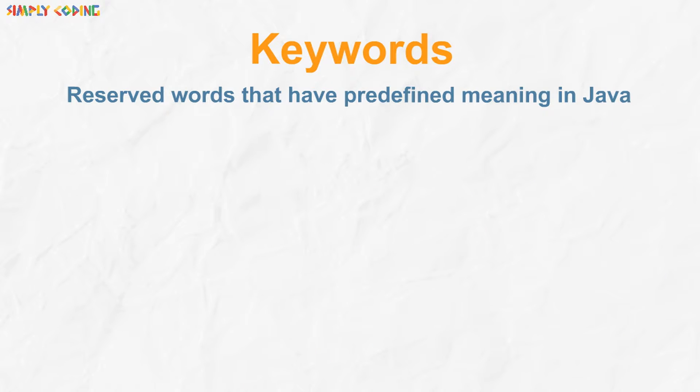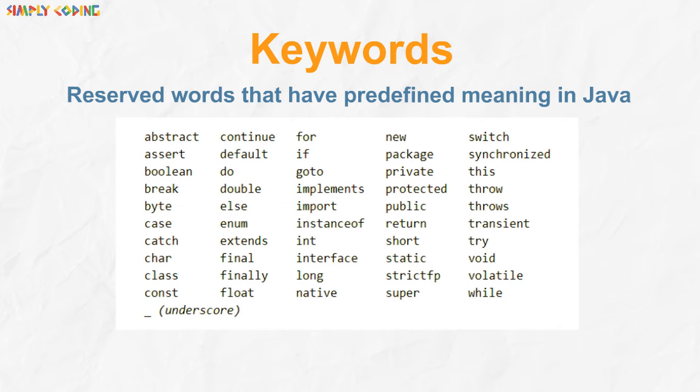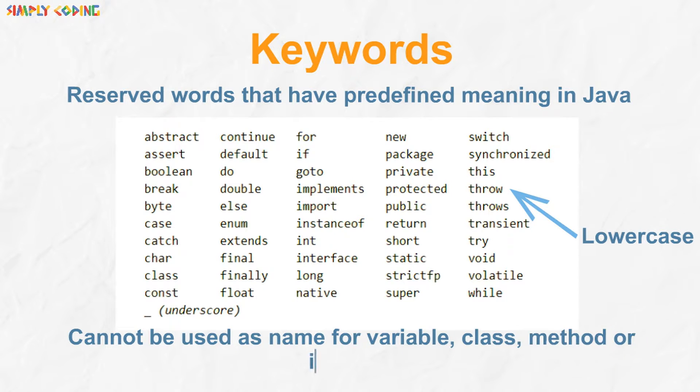Keywords are reserved words that have predefined meaning in Java. The words shown are all keywords. If you see, they all are in lower case. They cannot be used as names for variable, class, method, or identifier.